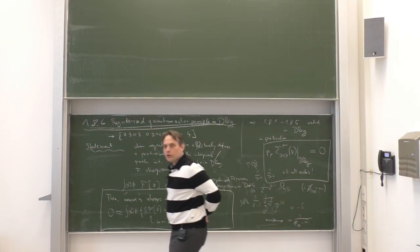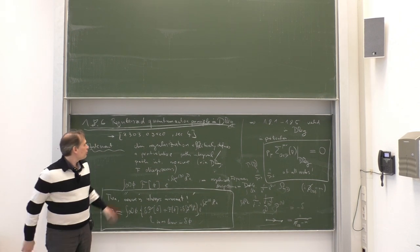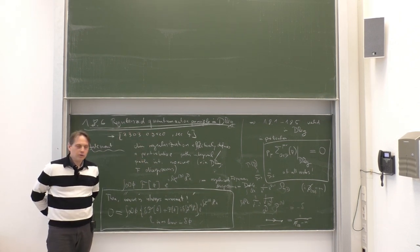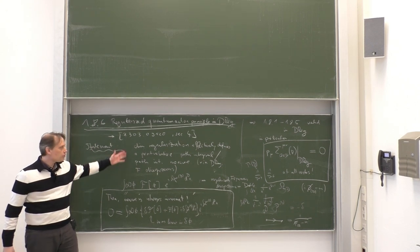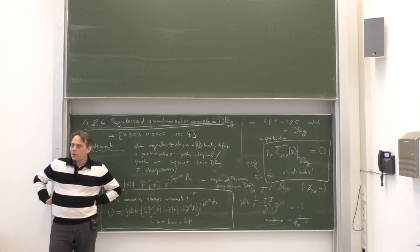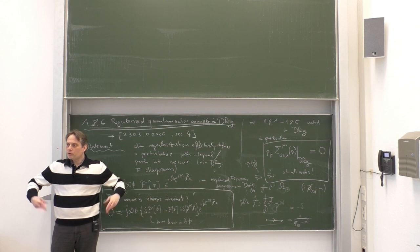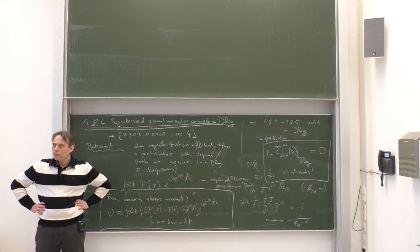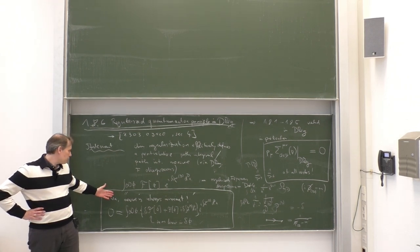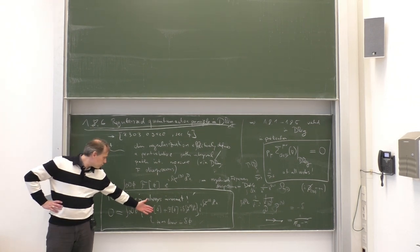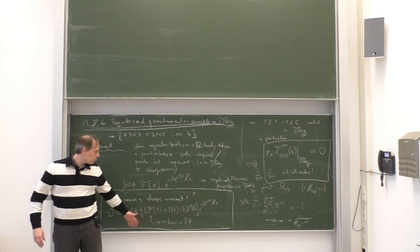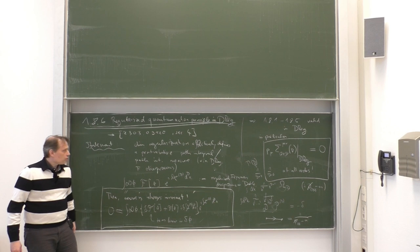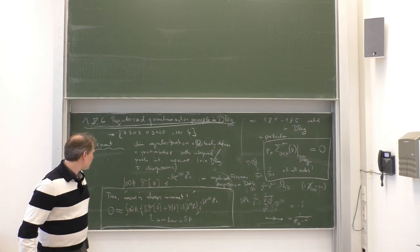We are in the middle of proving the regularized quantum action principle in dimensional regularization, which is basically the statement that the path integral as implicitly defined via dimensionally regularized Feynman diagrams has an invariant measure under any infinitesimal symmetry or field transformation, phi goes to phi plus delta phi. Let us immediately jump to the proof.